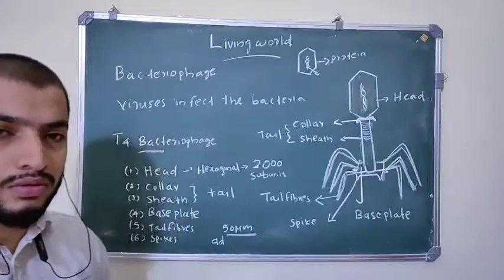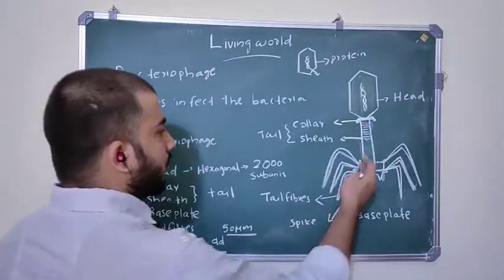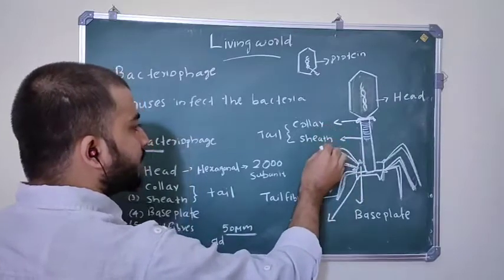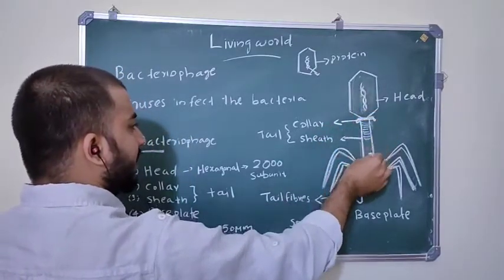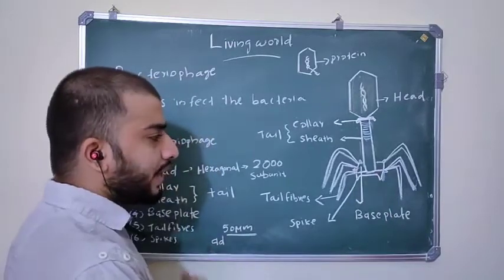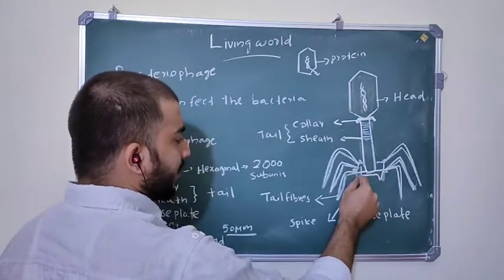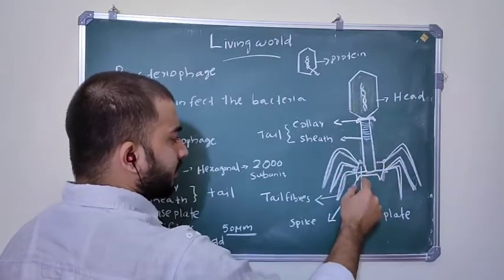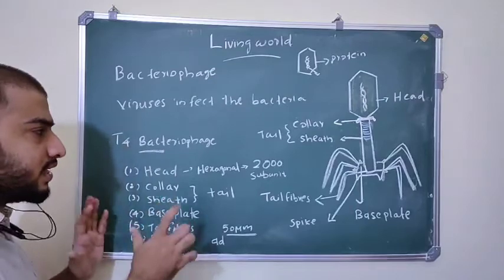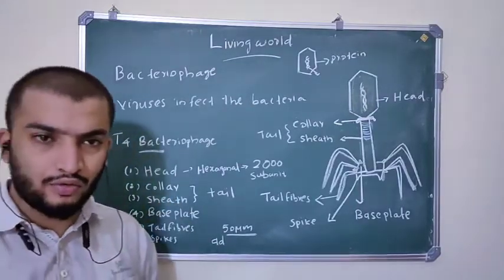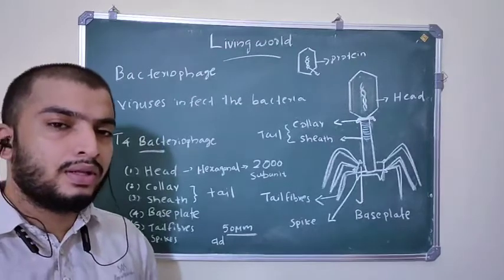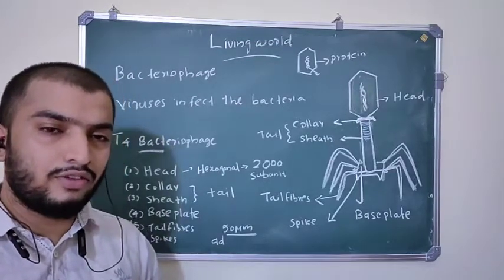The head region is made up of 2,000 subunits of proteins. Coming to the tail region — it has a helical shape. This helical tail has two parts: collar and sheath. The collar connects the tail and head. After the collar comes the sheath. The tail attaches to the base plate, which consists of tail fibers and spikes — a total of 6 tail fibers and 6 spikes on the Bacteriophage.